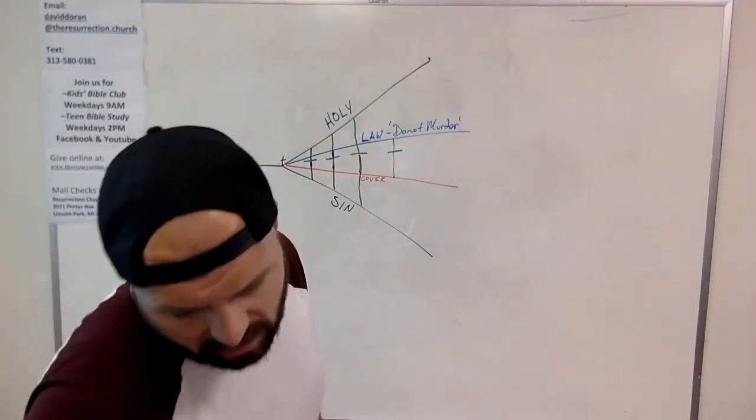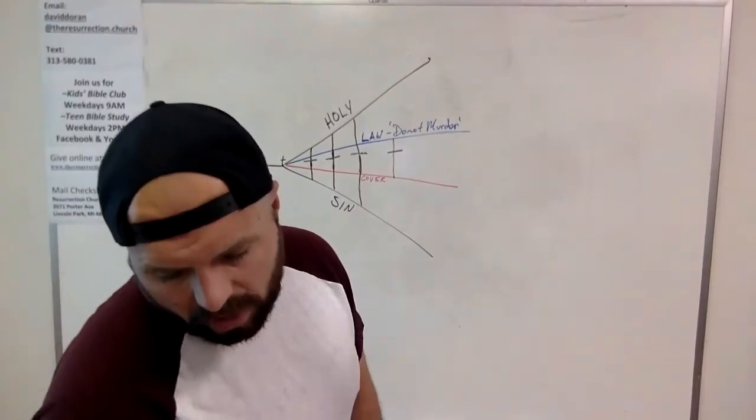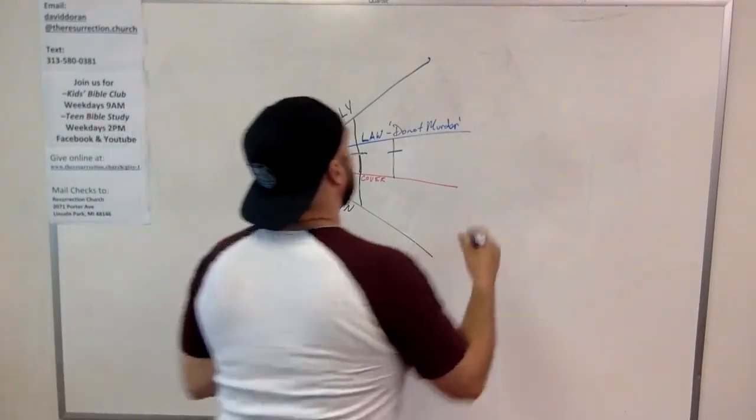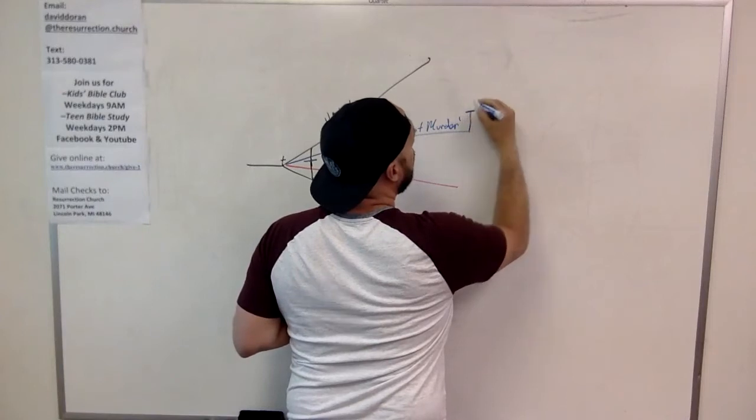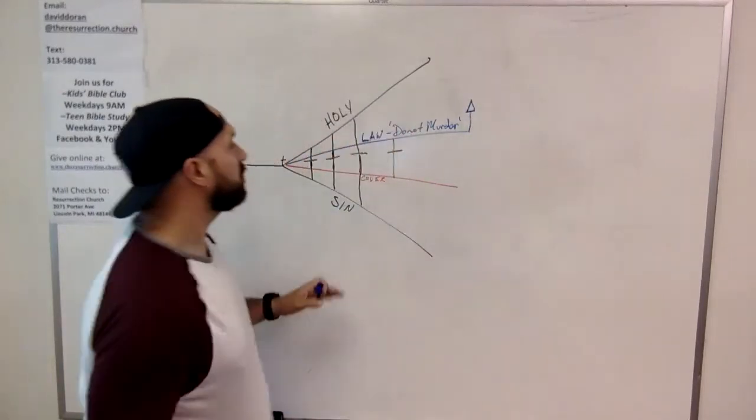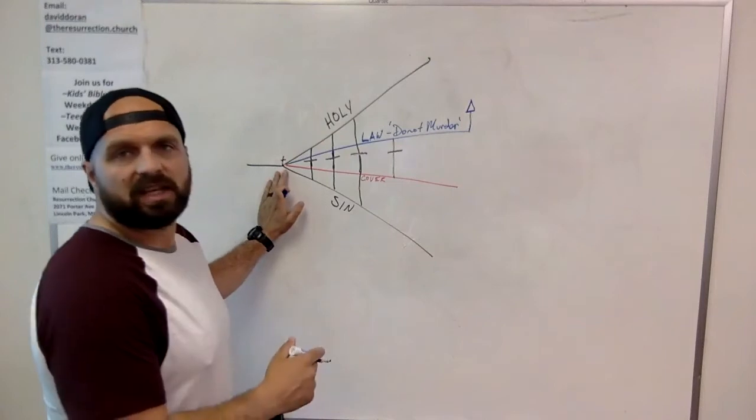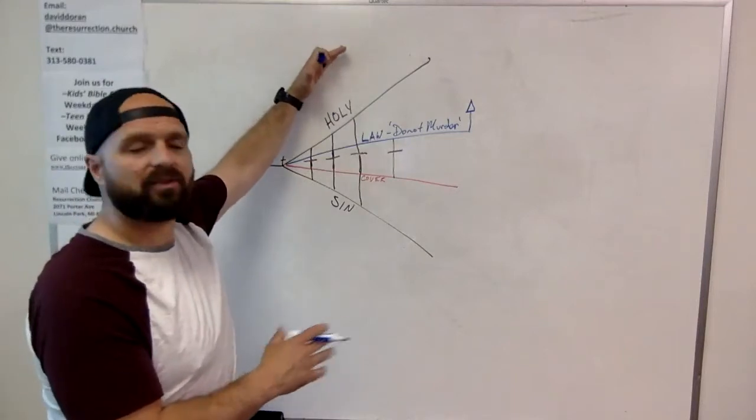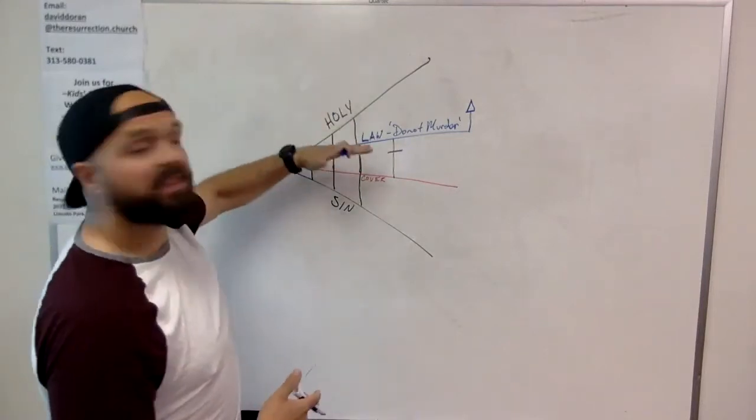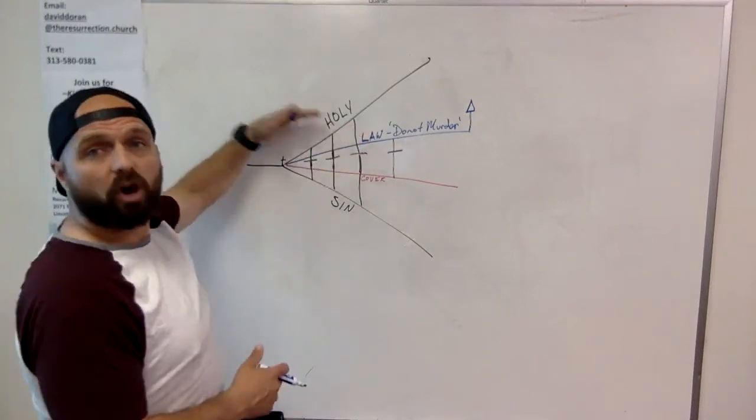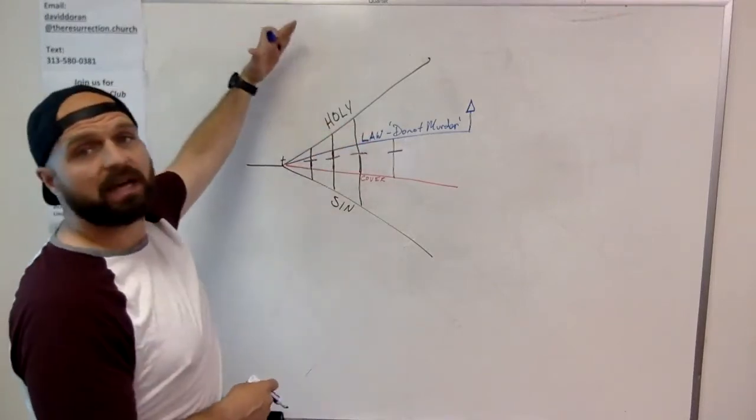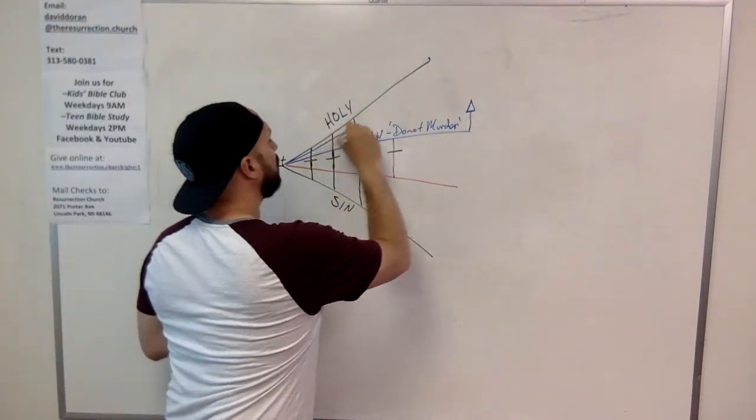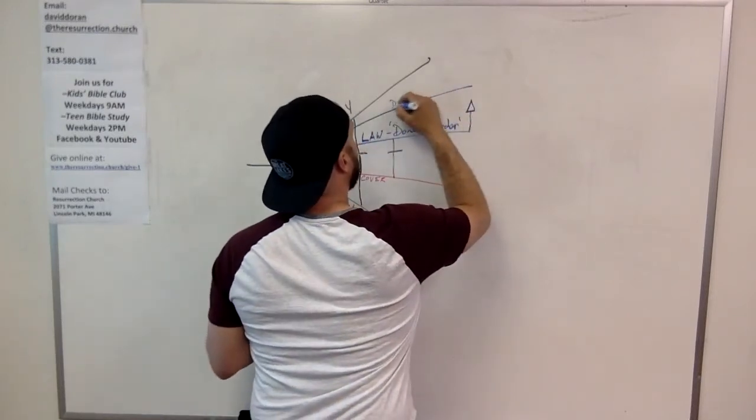What does Jesus do? He says, but I tell you, anyone who is angry with a brother or sister will be subject to judgment. He raises the bar. Now, the reason I've drawn it this way is because he actually doesn't raise God's holiness. You see, God's holiness was always far higher, that came out weird, far higher than this specific command, right? It was always high and lifted up. God was always out of reach.